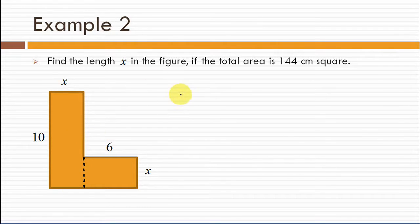Now notice that we can divide this area into the sum of two rectangles. The area is given equal to 144 cm squared. But on the other hand, the area is equal to the area of that rectangle plus the area of this rectangle.